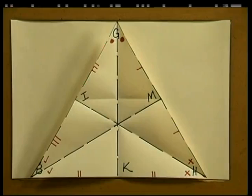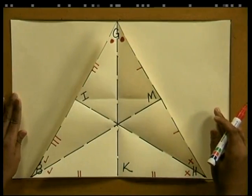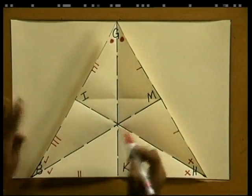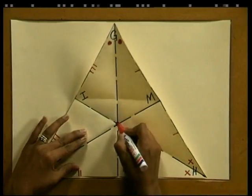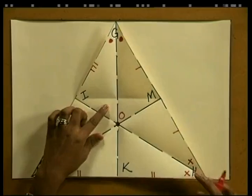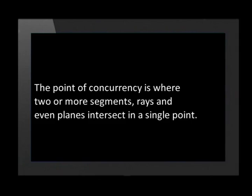Now there's another interesting thing we can observe. Look at these symmetry lines again — do you see that the symmetry lines intersect at this point? We will call this point O. The point O is called the point of concurrency. Do you remember what concurrency means? The point of concurrency is where two or more line segments, rays, and even planes intersect in a single point.